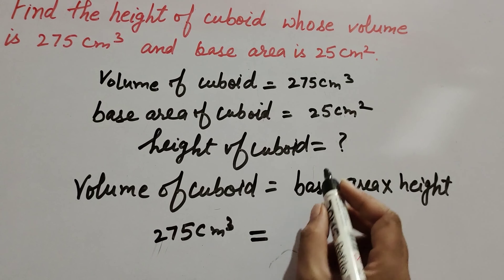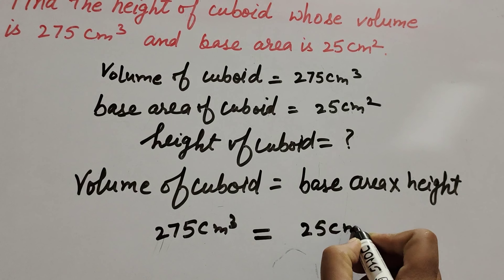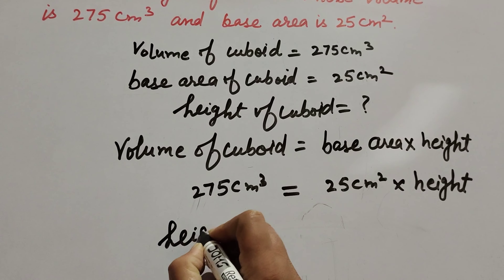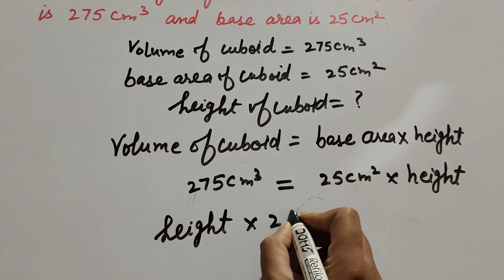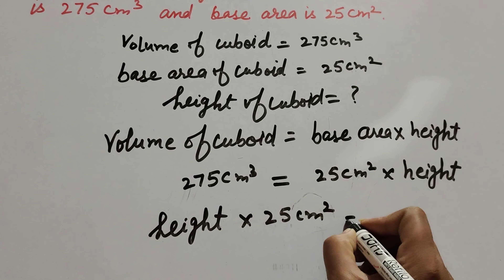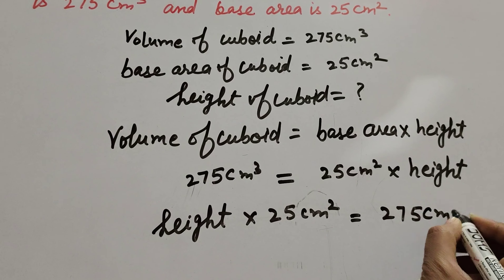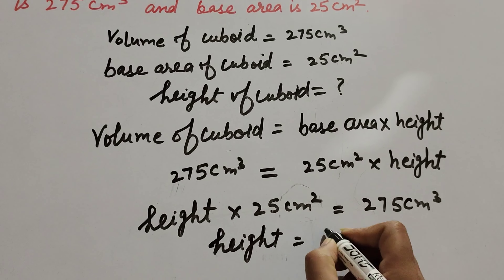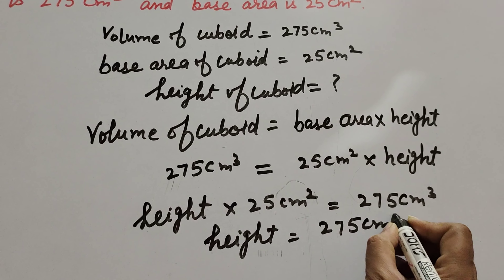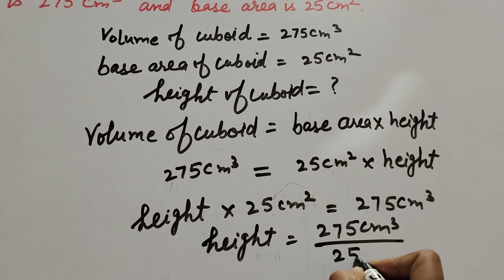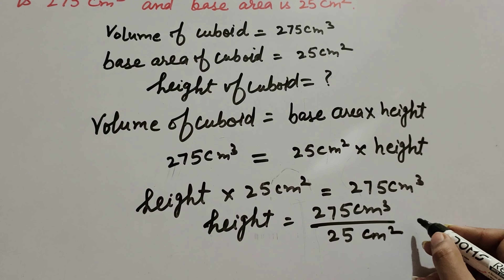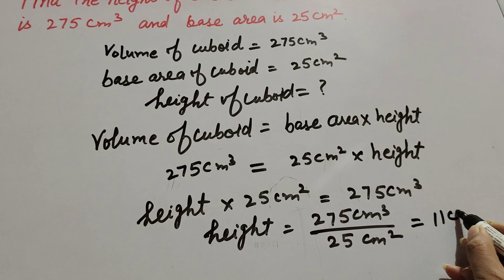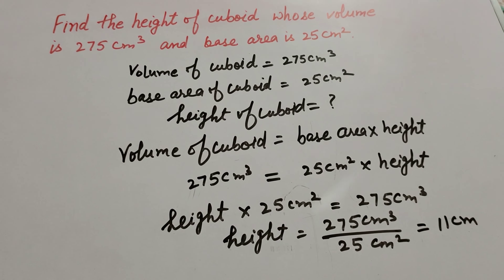Base area is also given as 25 centimeter square. We have to find its height. So: height × 25 centimeter square = 275 centimeter cube. Therefore, height = 275 centimeter cube ÷ 25 centimeter square. Dividing 275 by 25, we get 11. So the height of the cuboid is 11 centimeter.